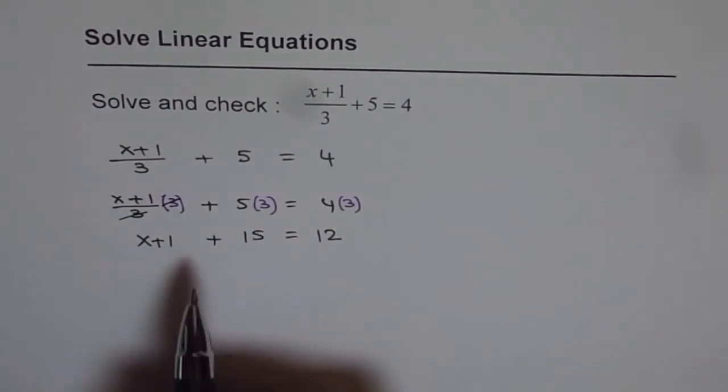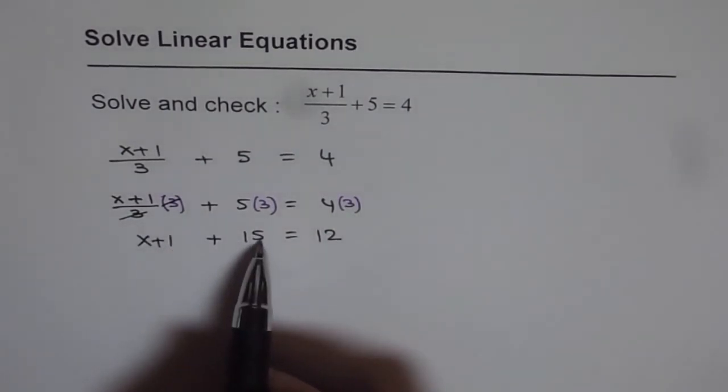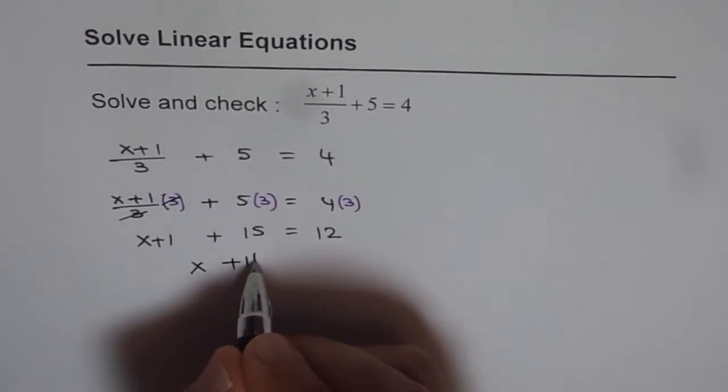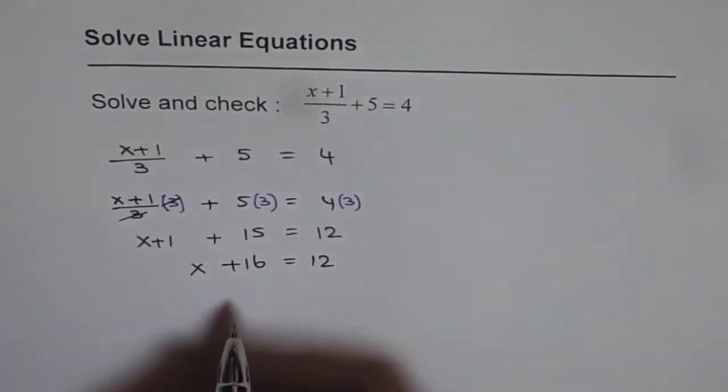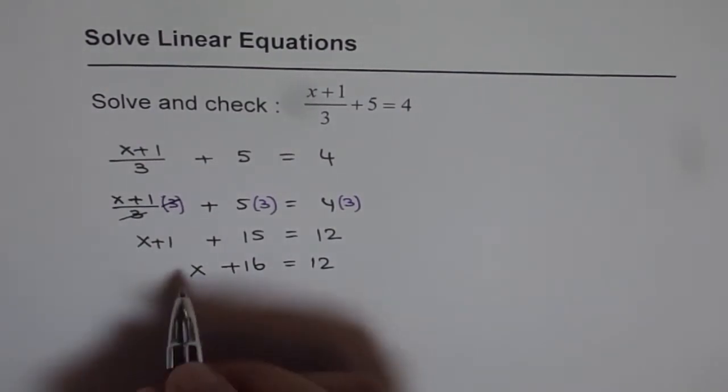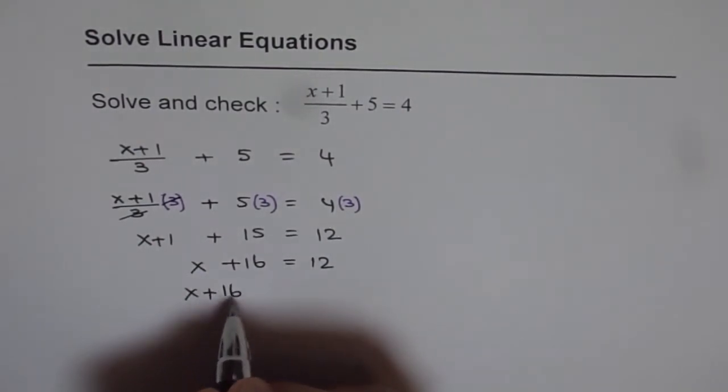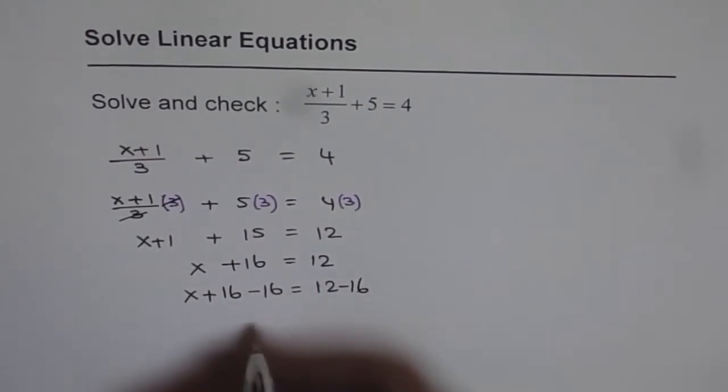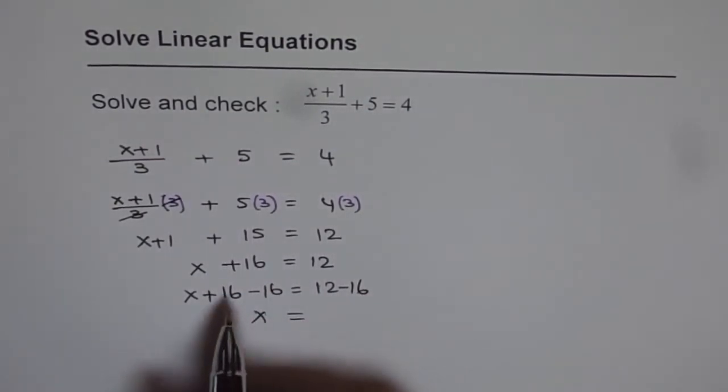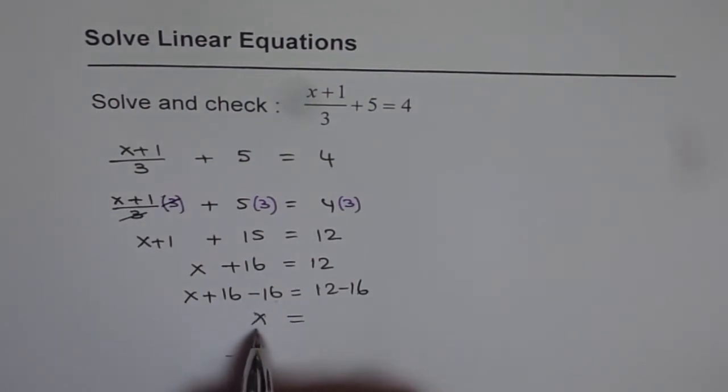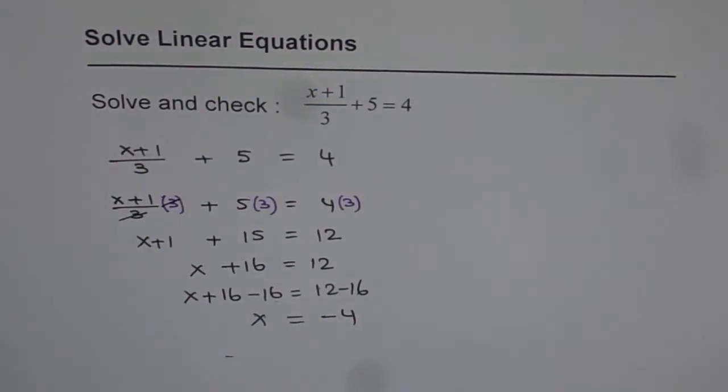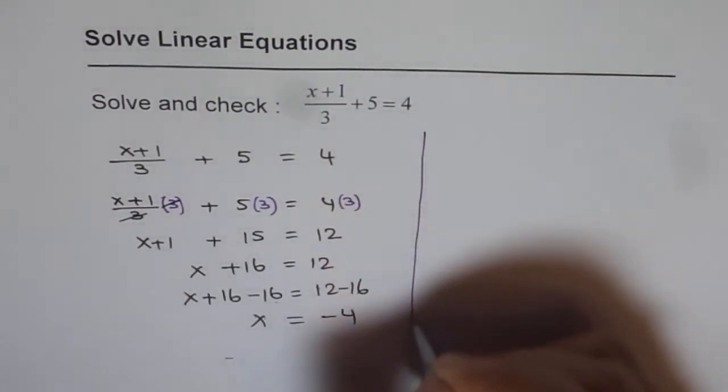Now we need x. We don't want 1 plus 15, which is 16. Let me write this as x plus 16 equals 12. Now we'll do minus 16 on both sides. That gives us x on the left side, and 12 minus 16 is minus 4. So our answer is minus 4.